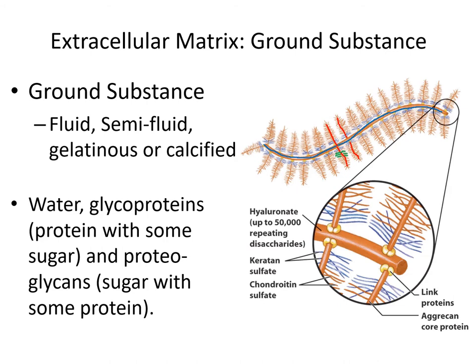These are huge molecules and because of that they have a massive surface area. They tend to adsorb a lot of water — they bind to a lot of water. That combination of water with these proteins and sugars gives us this jelly-like substance. In some cases, these large molecules can also grab onto a lot of minerals, specifically calcium — a process known as calcification. If these matrices become calcified, we have a more rigid structure, and that's what we see in bone.